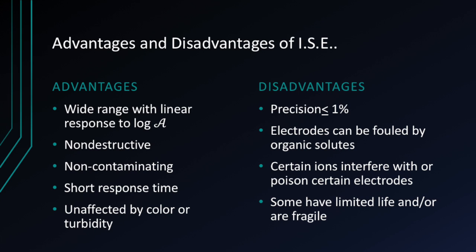Advantages of using an ion-selective electrode include a wide range with linear response, being non-destructive and non-contaminating, short response time, and being unaffected by color or turbidity. Disadvantages include precision of 1% or less most of the time, electrodes can be fouled by organic solutes, certain ions interfere with or poison certain electrodes, and many electrodes have limited life or are fragile.